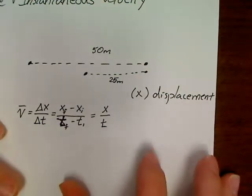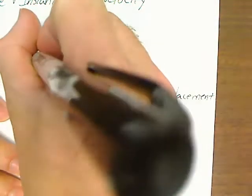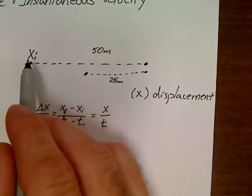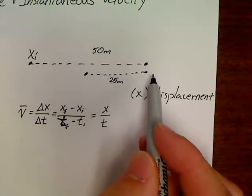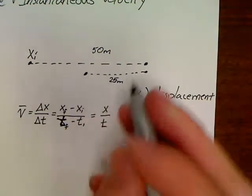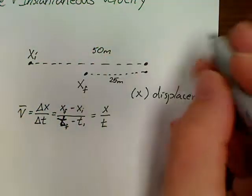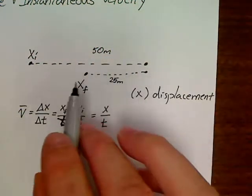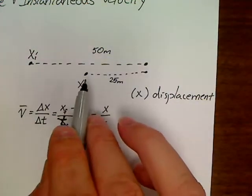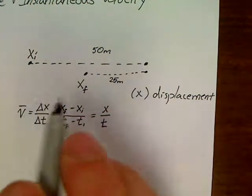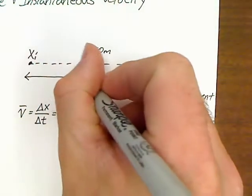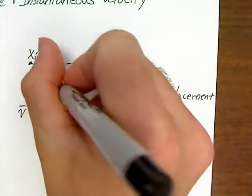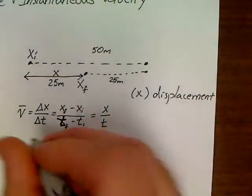So, let's take a look at this problem. We're starting at this point, we'll call that our X initial. We travel 50 meters, get to this point, turn around, and come back 25 meters. So, our X final is here. Displacement is not how far you've traveled. That's 75 meters. Displacement is where you are now compared to where you started. So, in this problem, our displacement is only 25 meters.